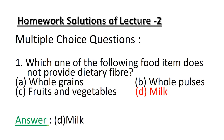If you recollect what we learnt about roughage, you can very easily note that milk is the only food item which does not provide dietary fiber out of the four food items. Whole grains, whole pulses, fruits and vegetables do provide dietary fiber and help in proper functioning of our digestive system. So Option D Milk is the correct answer.